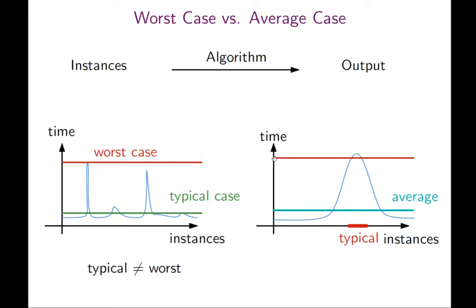In practice you might encounter a lot of structured instances which take a lot of time, so typical instances might take longer than the average. We would like to find a concept which is something in between worst case and average case to give a more realistic estimate, a theoretical estimate on the running time of an algorithm.